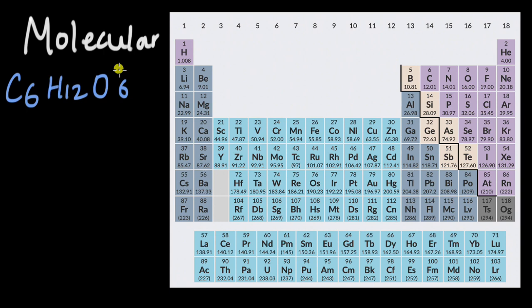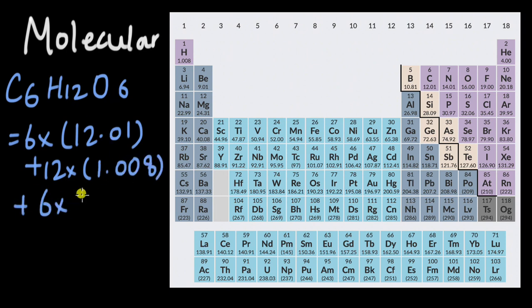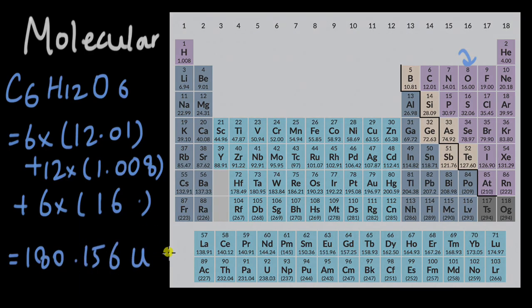Okay, hopefully you gave this a shot. Now this will be six into the atomic mass of carbon, 12.01 plus 12 into the atomic mass of hydrogen, 1.008 plus six into the atomic mass of oxygen. And oxygen is over here. This is oxygen. So atomic mass is 16.00. Now when we solve this, this comes out to be equal to 180.156 atomic mass units.